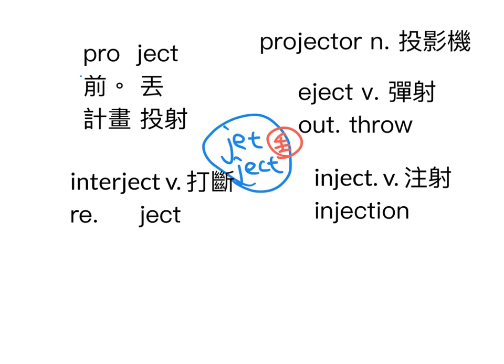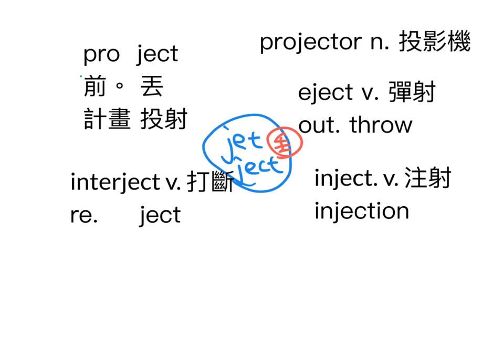接下来REJECT，RE这个单字除了有AGAIN的意思之外，还有BACK向后退的意思。往后丢，人家往前丢你偏偏往后丢，REJECT就是拒绝。